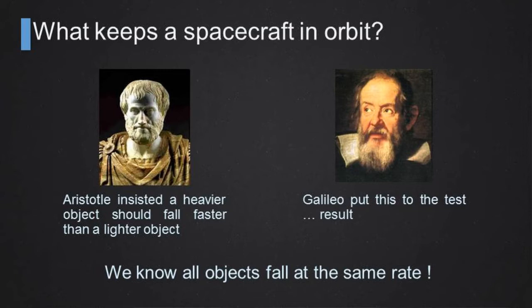Galileo put this to test. We know that he made experiments from Pisa Tower dropping objects. And the result was, of course, that all objects fall at the same rate. Our observation is influenced by the presence of atmosphere, and it changes the way objects behave during the free fall.